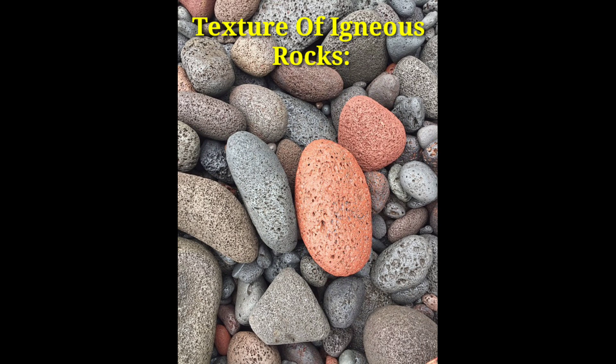Texture is comprised of grains, and there are a few main types of igneous rock grains. Equant grains are those with boundaries of equal lengths. Rectangular tablet shapes are known as tabular grains. Acicular grains are slender crystals. Long fibers are known as fibrous grains, and a grain that is prismatic is one that has different types of prisms.